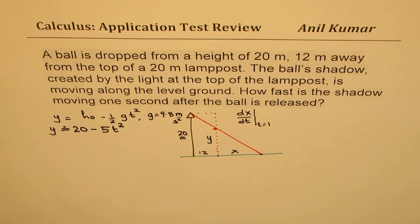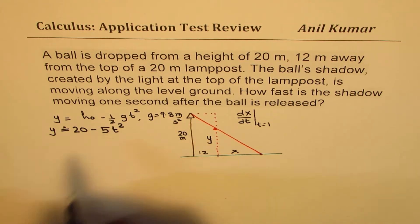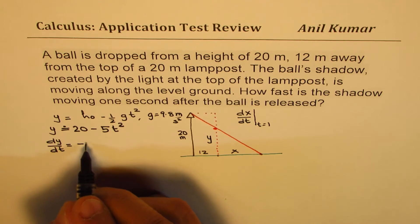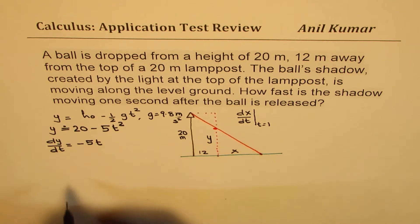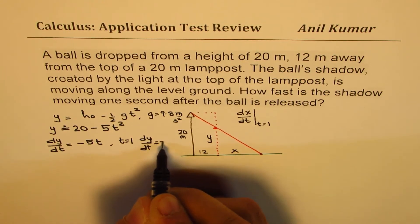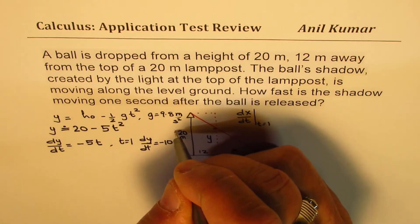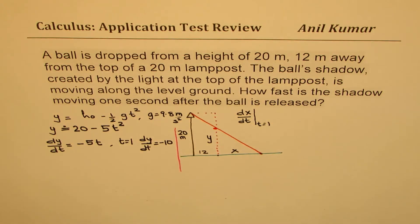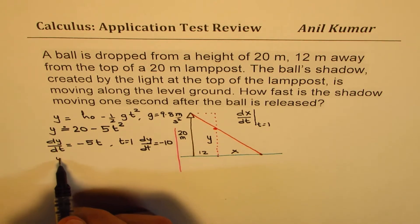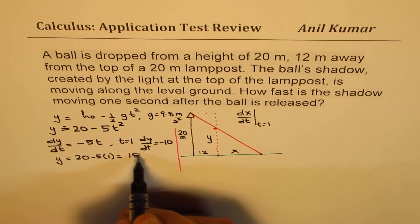Now we can also find rate of change from here of the height at this particular time with respect to time. So dy/dt is equal to minus 10t. So at t equals to 1, dy/dt is equal to minus 10. Perfect. So we've got this dy/dt thing here.